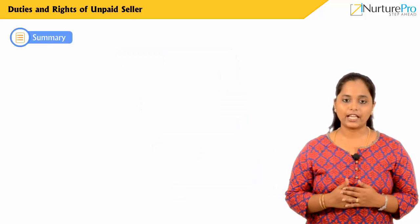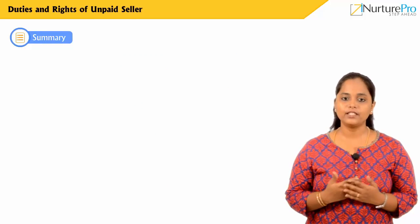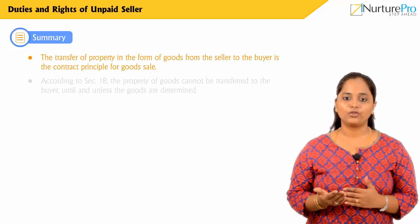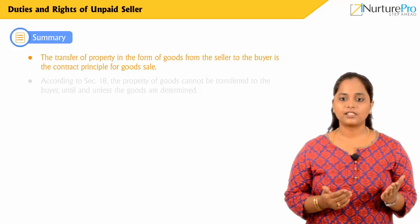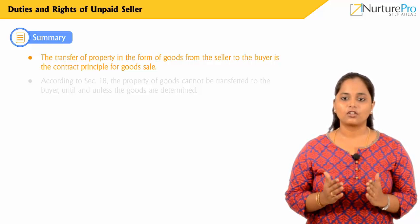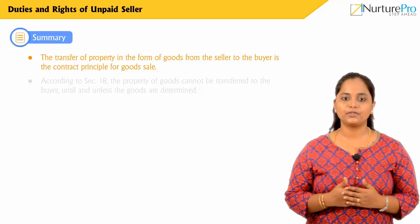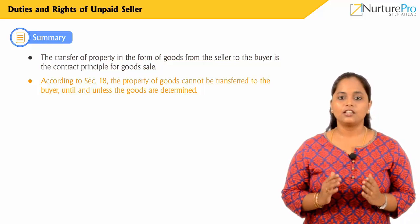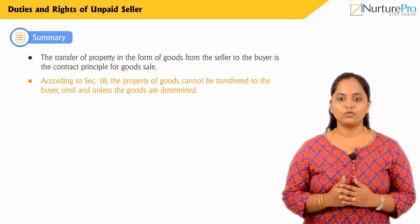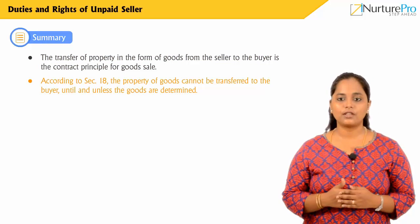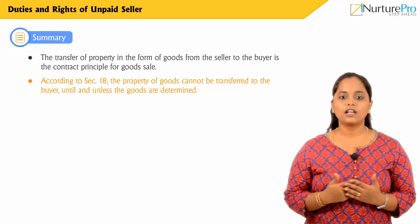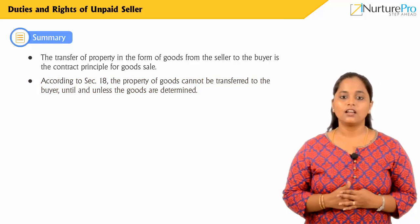Let's have a quick recap on what we discussed. The transfer of property in the form of goods from the seller to the buyer is the core contract principle for goods sale. According to Section 18, the property of goods cannot be transferred to the buyer until the goods are determined.